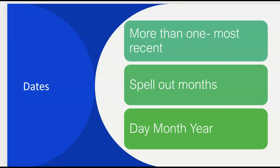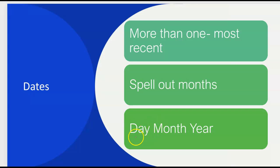Regarding dates — when referring to months, please spell out the full name of the month; don't abbreviate. Anytime you use a date in MLA format, whether on the works cited page or elsewhere, dates are formatted as day, month, year. For example: 10 September 2021.